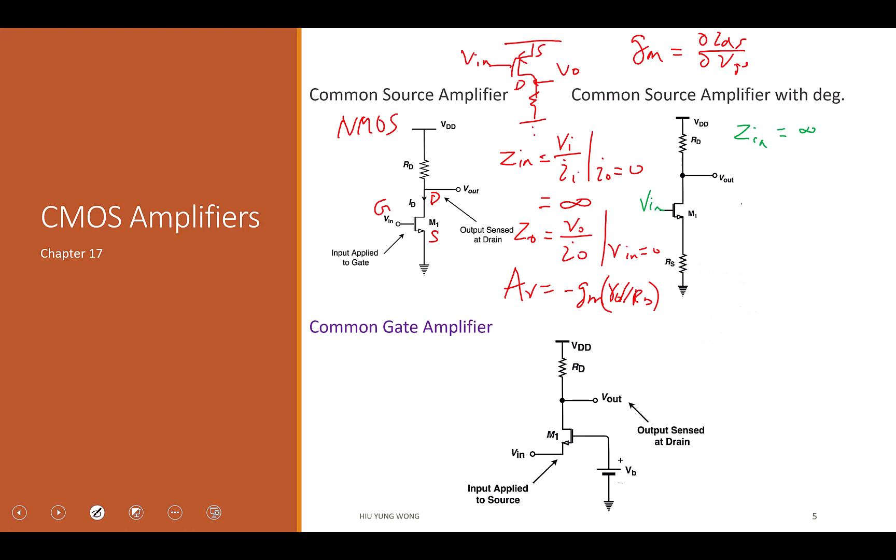I forgot to talk about the output impedance here. For the common gate, do you remember what is output impedance for common gate? R0 parallel RD. Because I ground this one. Then this whole thing, just like a transistor with the gate and source grounded. And I look down, it is R0. I look up, it's RD. I have two paths to go to ground. So it is R0 parallel RD.